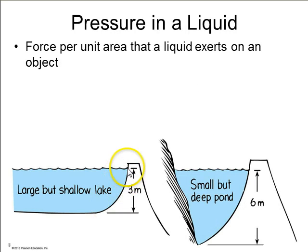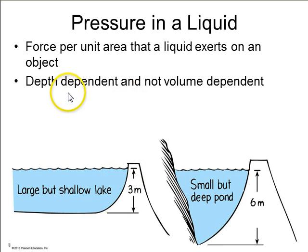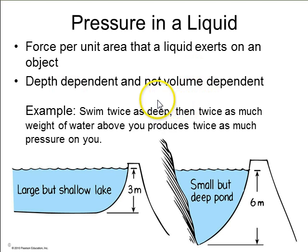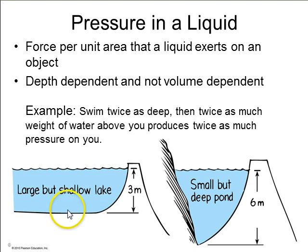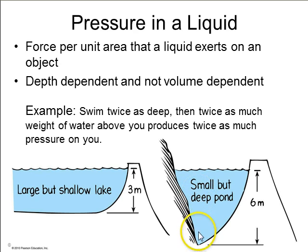In a liquid, pressure depends on the depth, but not the volume of the liquid. For example, if you swim down to the bottom of a large but shallow lake there'll be some pressure, but it'll be twice as much if you swim down to the bottom of a small but very, very deep pond, because it only depends on depth.